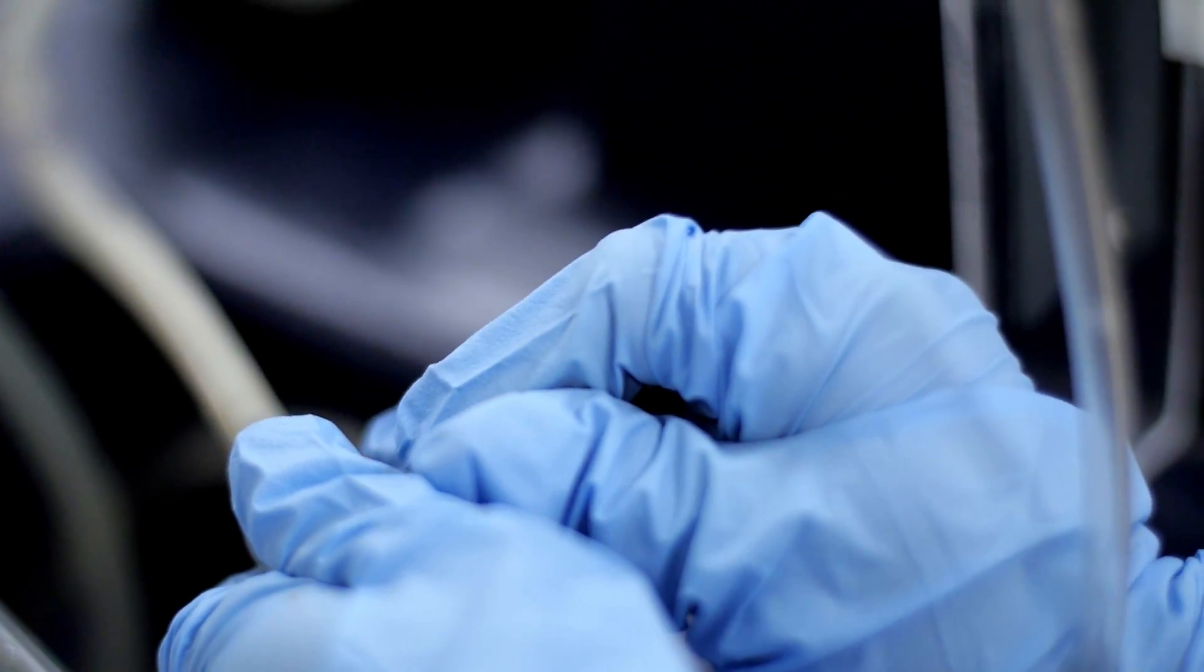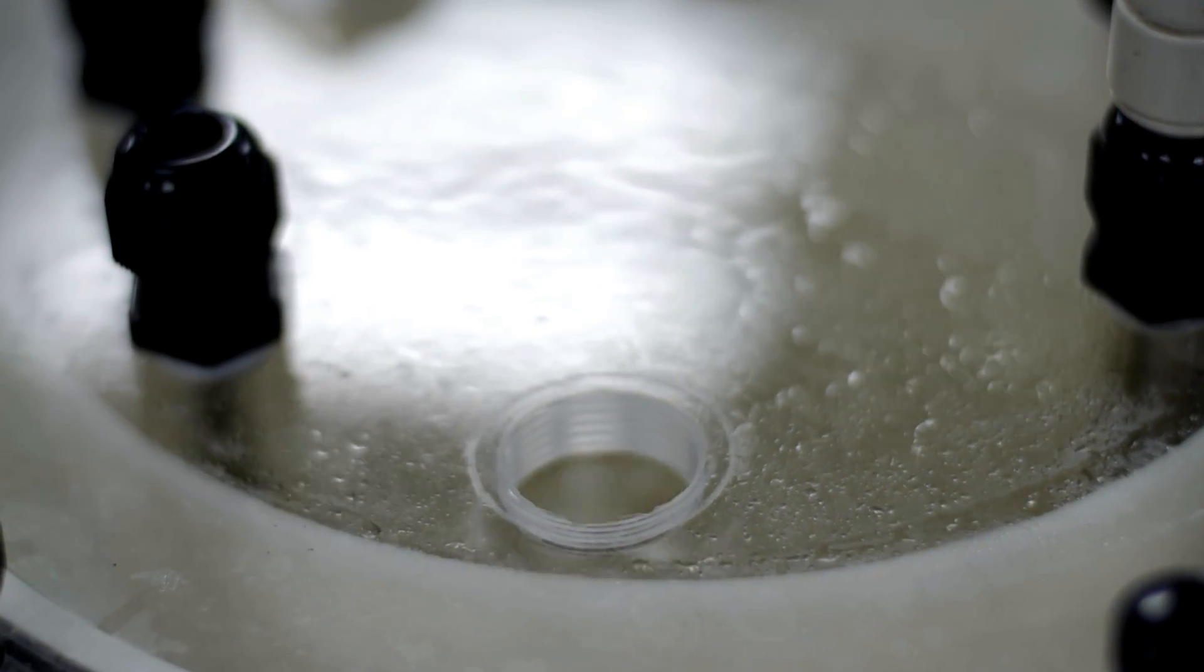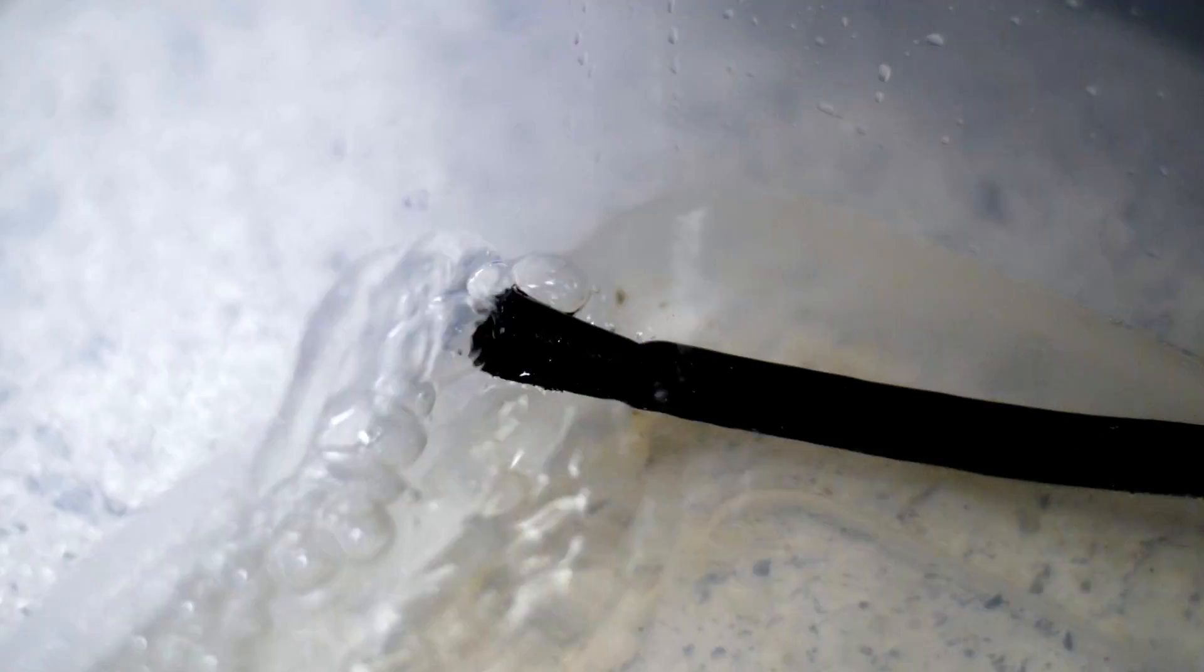The student places tubing in the feed tank and starts the pumps and bubbles air through the reactor. The oxygen allows microbes to break down the organic matter present in wastewater. The water then flows out of the reactor to another tank.